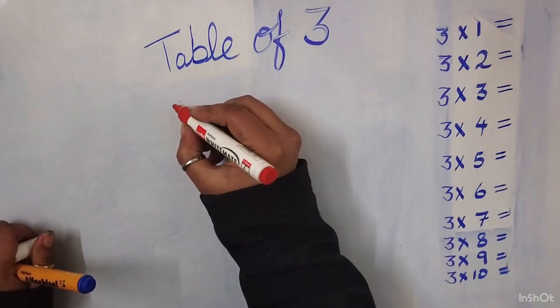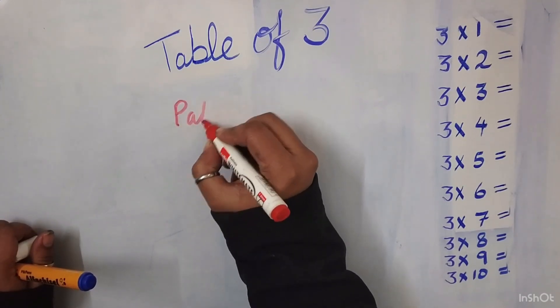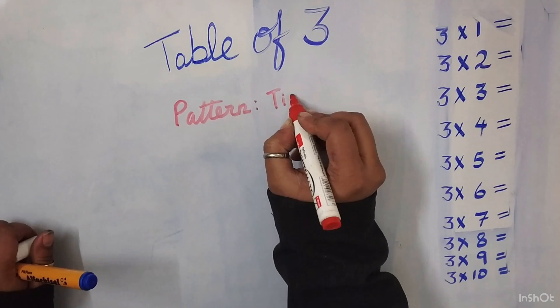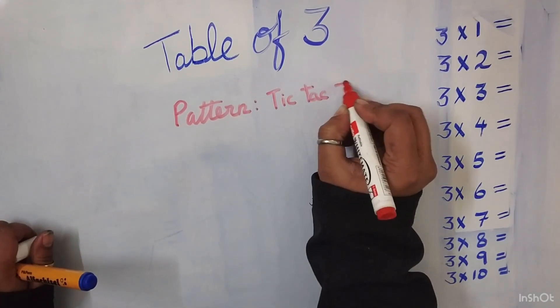Let us start the table of 3. The pattern for the table of 3 is tic-tac-toe pattern. This surely sounds interesting. Let's get going.